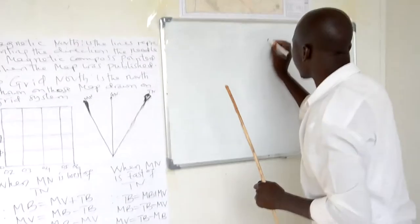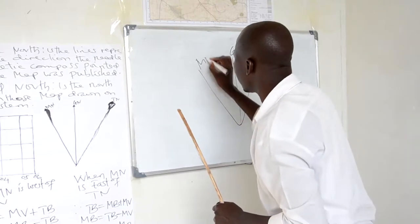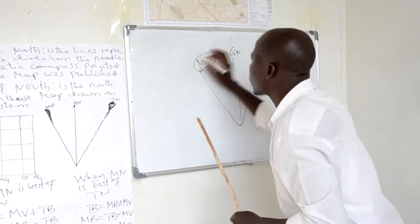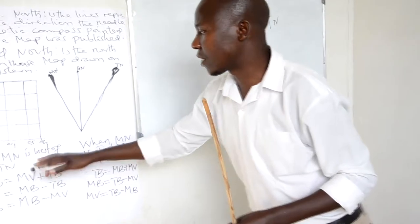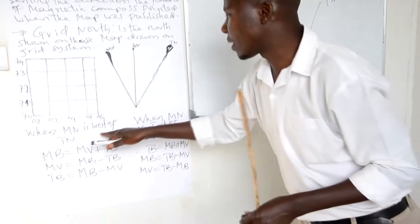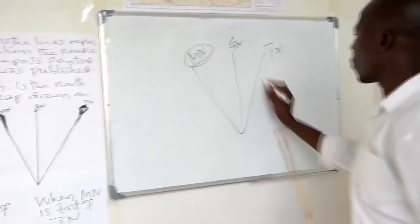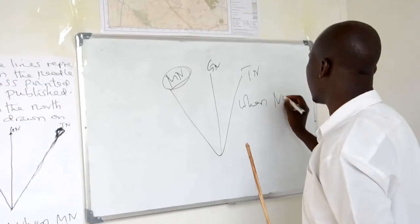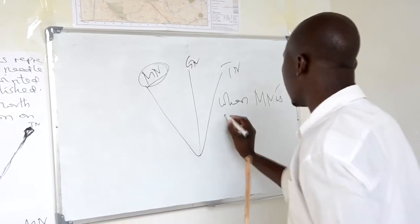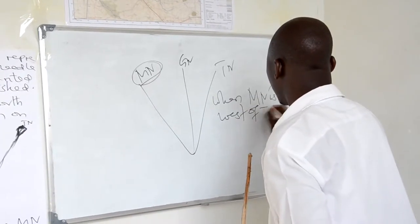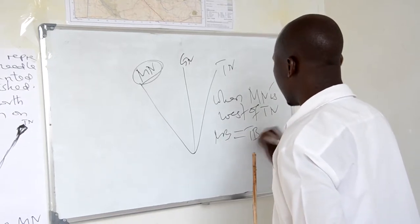There is a Grid North, a True North, and a Magnetic North. This magnetic north is just moving around. You have to remind yourself that when magnetic north is west of true north, therefore magnetic bearing is equal to true bearing plus magnetic variation.